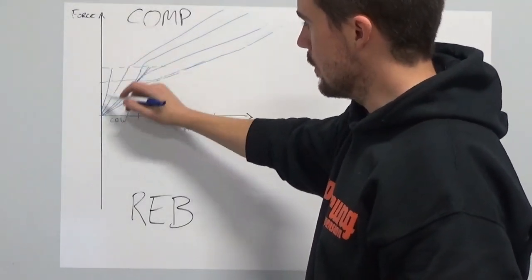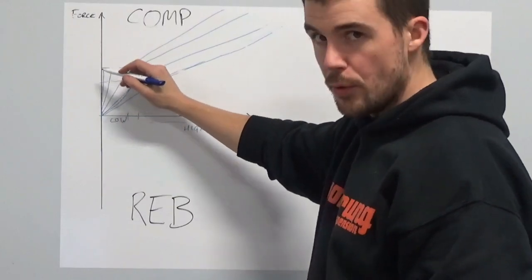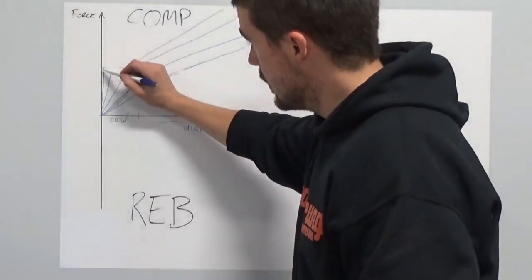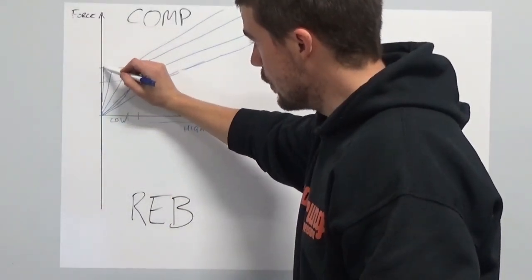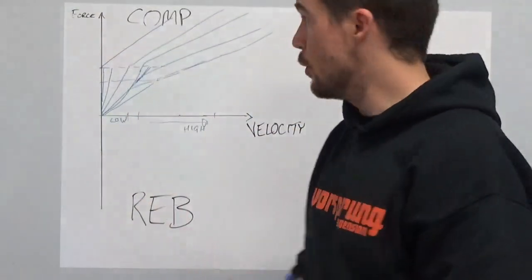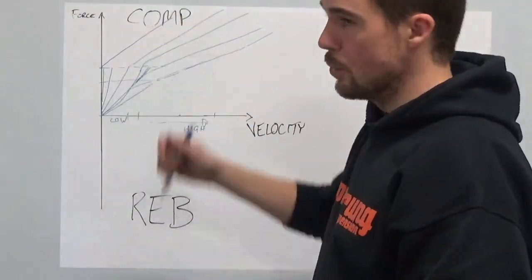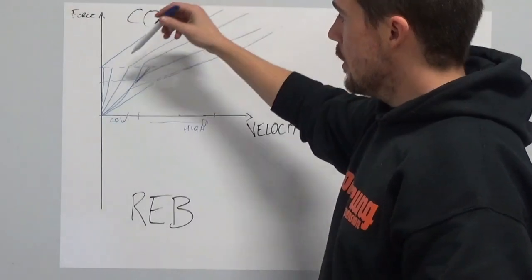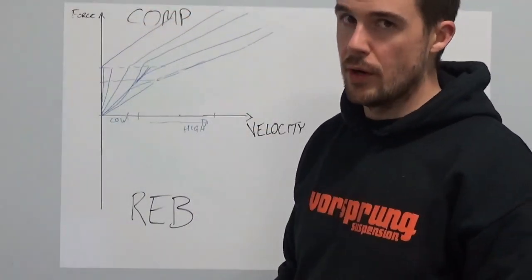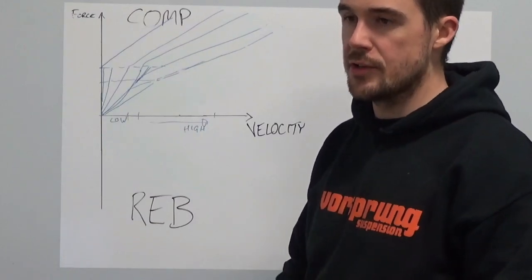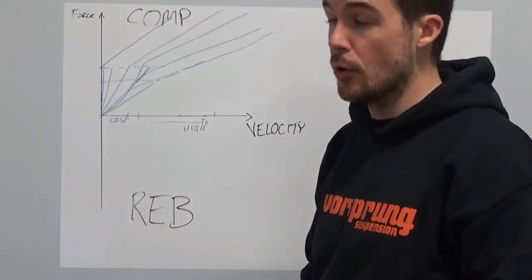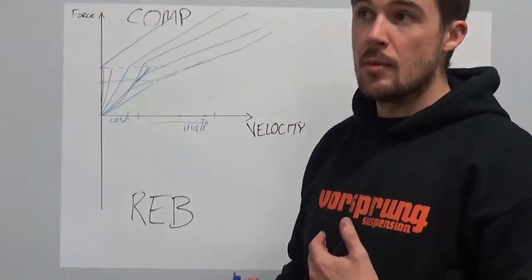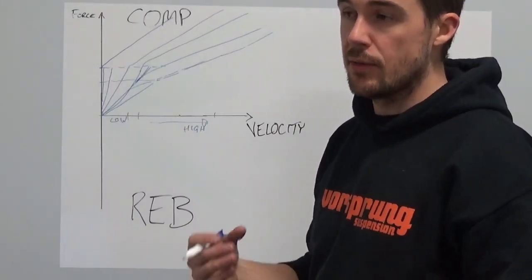Increasing the preload basically offsets this curve. What that means is we can separate where this curve sits and how much damping we have at this velocity from how much damping we have at that velocity. Using the low speed adjuster, we can make this steeper. It will get to that threshold there, that force, and then open up. If you close it right off, then basically there's no flow through the low speed circuit. Everything has to go through a circuit that is held shut by a certain amount of preload. Then nothing happens until you reach this force, and that is a pedaling platform. Then you only have flow through the high speed circuit.